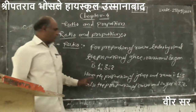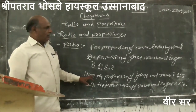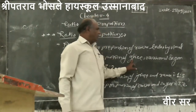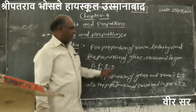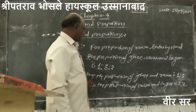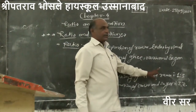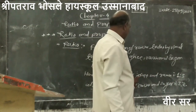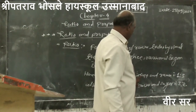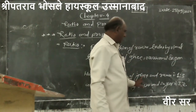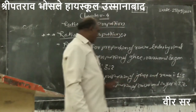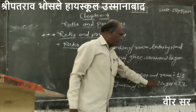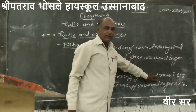Now in these two proportions, one quantity is the same. Which element is the same? In the first proportion, the proportion of Ghee and Rava is 1 is to 3 — the two elements given are Ghee and Rava. In the second proportion, the two elements are Rava and Sugar. Rava is common in these two proportions.